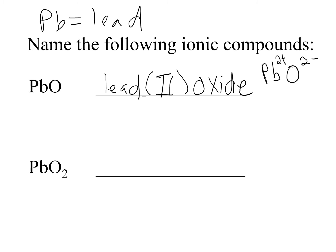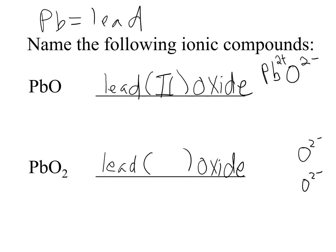The next one is PbO₂ — Pb is lead, parentheses ready. We have 2 oxides: each O²⁻ is negative 2, so 2 oxides give an overall charge of negative 4. With 1 lead, to balance that, lead must be positive 4 — so we put Roman numeral 4. The name is lead(IV) oxide.